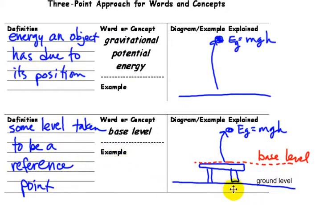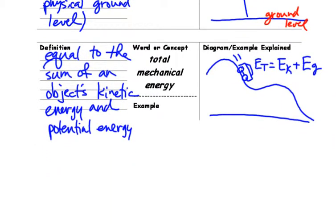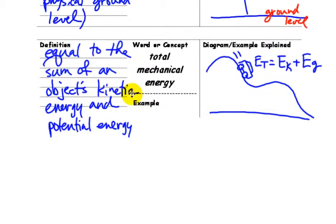Base level, some level taken to be a zero reference point. So if you have a ground level, sometimes you may choose a table to be that zero level or reference point. Ground level, the zero height level, so that's what we assume where the actual ground is determined to be. And lastly, total mechanical energy equal to the sum of all objects' kinetic energy and potential energy.